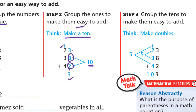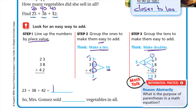8 plus 2 is 10, plus 3 is 13. Write the 3 down and carry 1. Step three: in the tens we have 1, 2, 3, and 4. Make doubles: 1 plus 4 is 5, and 2 plus 3 is another 5. Five plus five is 10, so the answer is 103.